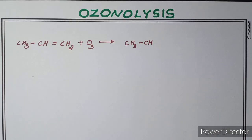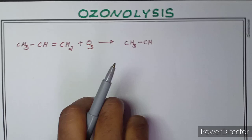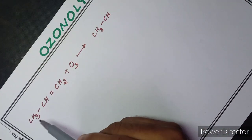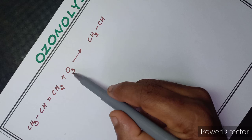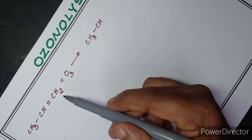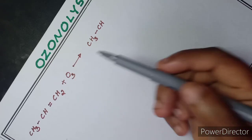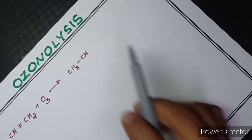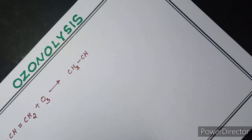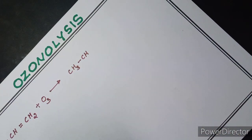Our learning is ozonolysis. This is ozonolysis. We will start with an alkene — I will take an alkene, prop-1-ene. I will take an alkene to get an alkene; look at that.